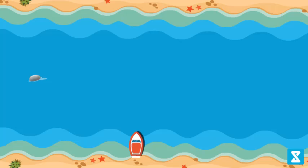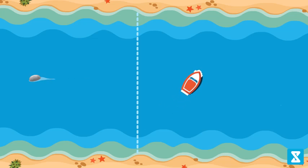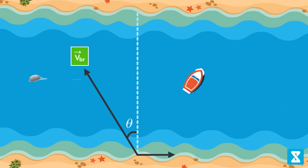A boat starts from point A on one bank of a river with velocity VBR making an angle theta with the vertical. River is flowing along positive X direction with velocity VR. Width of the river is W.